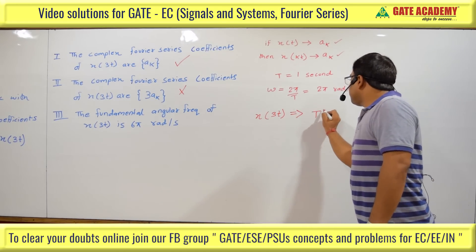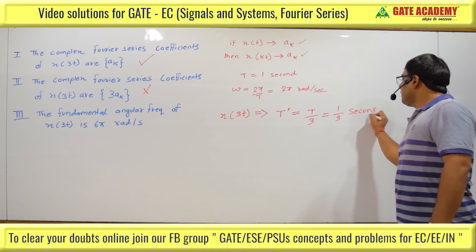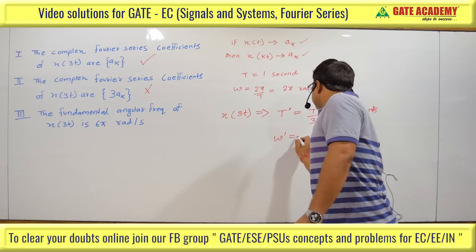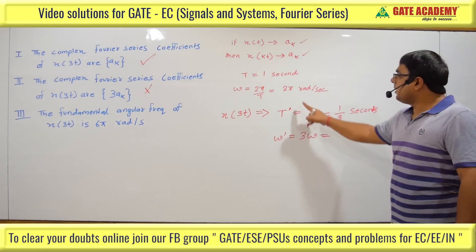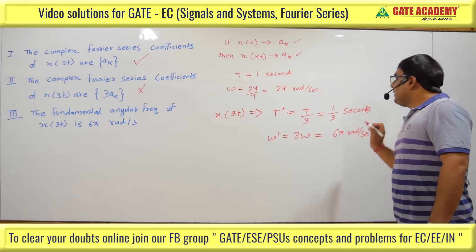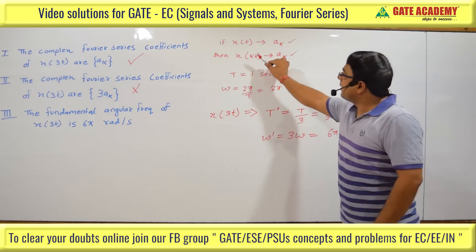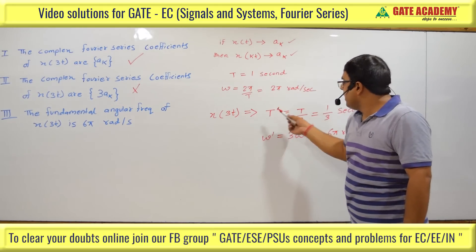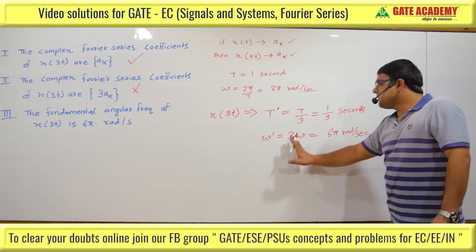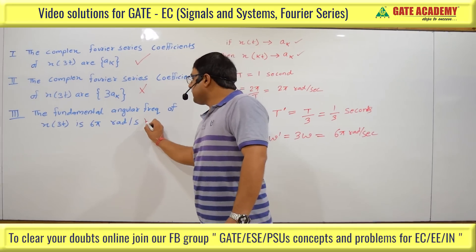For x(3t), the new time period T' = T/3 = 1/3 seconds. If the time period is divided by 3, the frequency multiplies by 3. The original ω₀ = 2π rad/s, so the new angular frequency = 3 × 2π = 6π rad/s. Therefore Statement 3 is also correct. With time scaling, the coefficients remain the same but the time period changes. Statements 1 and 3 are correct, so the answer is option B.